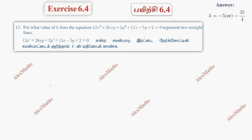Hi students, this is Alex here. XI 6.4, question number 13. For what value of K does the equation represent 2 straight lines?